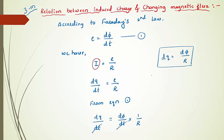Here dq indicates induced charge, dΦ indicates changing magnetic flux, and R indicates resistance. So induced charge equals changing magnetic flux divided by resistance. This gives the relation between induced charge and changing magnetic flux — concluding our study of energy consideration in motional EMF and the relation between induced charge and changing magnetic flux.